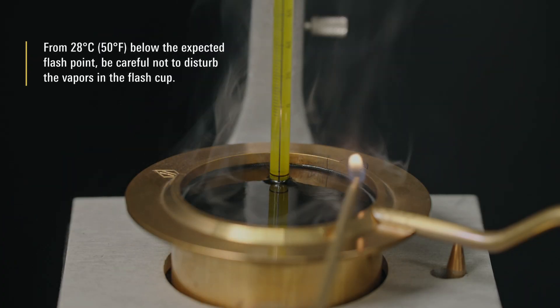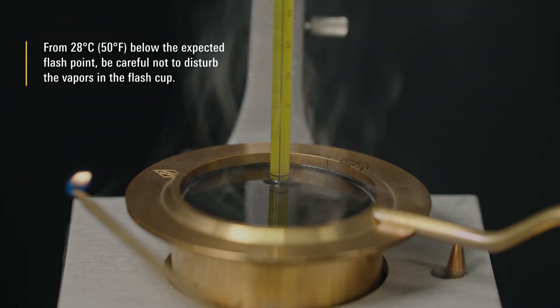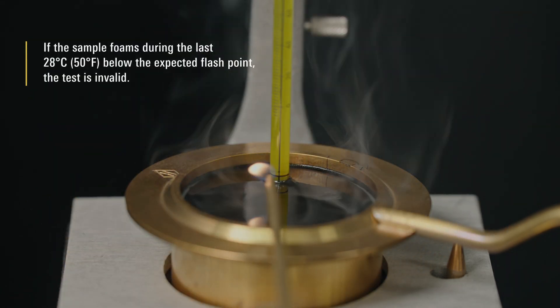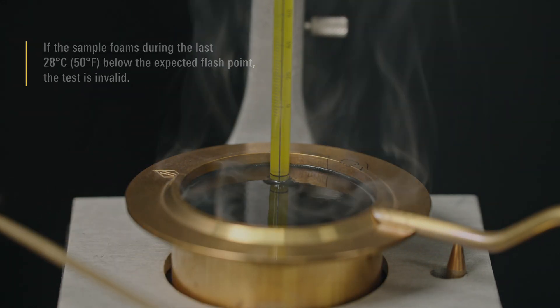From 28 ºC below the expected flash point, be careful not to disturb the vapors in the flash cup. If the sample foams during the last 28 ºC below the expected flash point, the test is invalid.